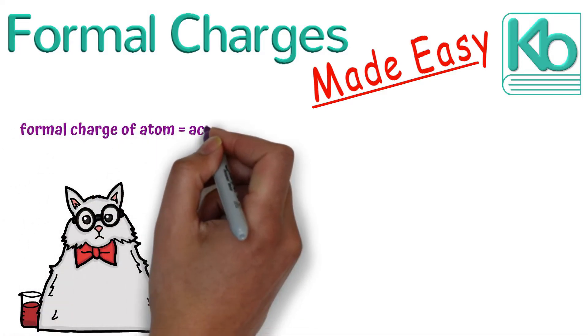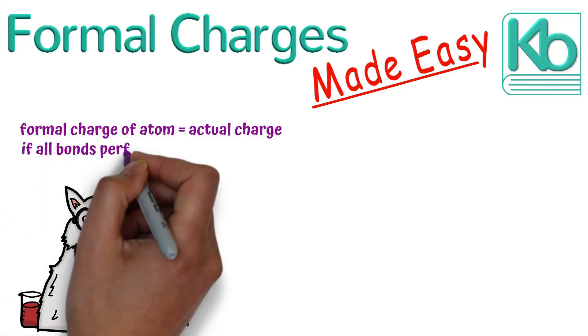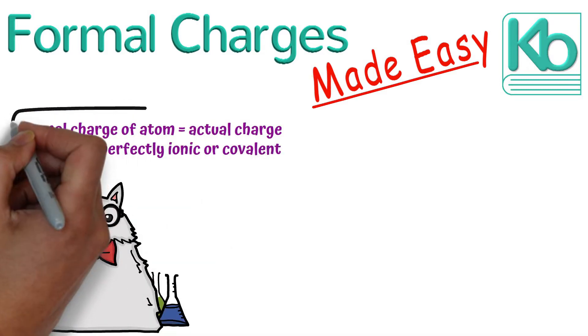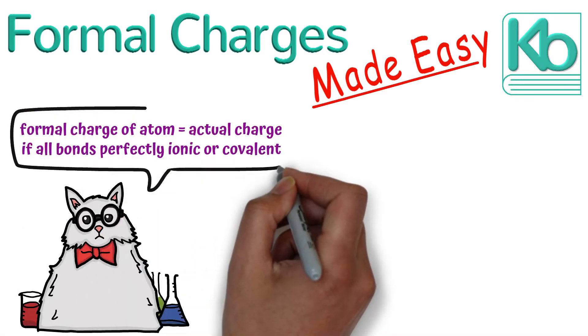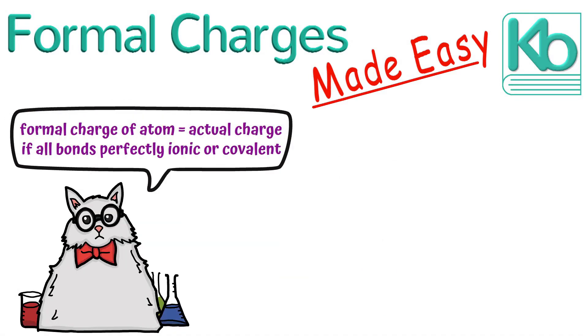The formal charge of an atom is its actual charge if all of its bonds were perfectly ionic or covalent. But of course, most bonds are not perfectly ionic or covalent, so the actual charge of an atom often differs from its formal charge a little, but the formal charge is a good place to start.